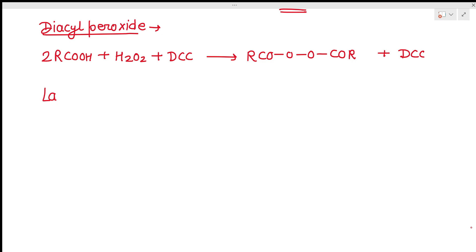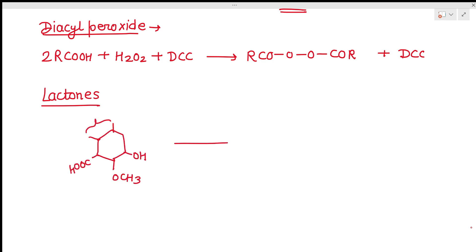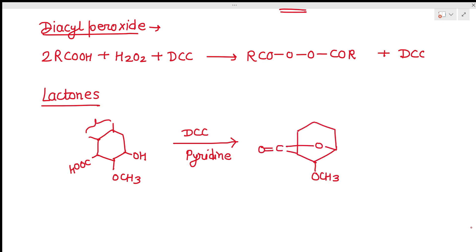DCC can also be used for the preparation of lactones. For lactonization we normally use acetic anhydride in pyridine, but DCC in pyridine is a better reagent. Gamma-hydroxy acids treated with DCC in pyridine undergo lactonization — the OH group and the COOH group react, forming the lactone ring. These are some of the key applications of DCC.